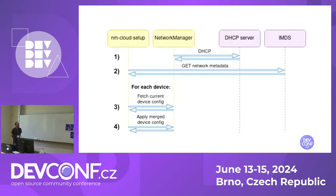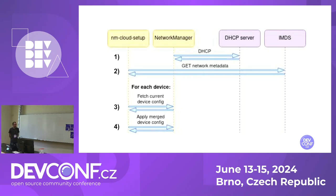This diagram illustrates what happens when an instance boots with Network Manager and NM Cloud Setup. Initially, there is DHCP from Network Manager to get the IP address, and then NM Cloud Setup starts and contacts the IMDS to fetch the network metadata. After that, for each device described in the metadata, it asks Network Manager for the current configuration of the interface, and then does a merge of the configuration with the metadata to produce a new configuration, which is then applied to Network Manager. After some time, NM Cloud Setup gets restarted, so the fetch step is repeated, and if necessary, the merge and apply steps as well.